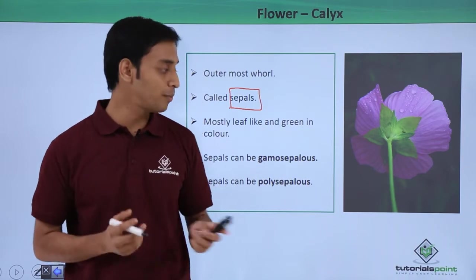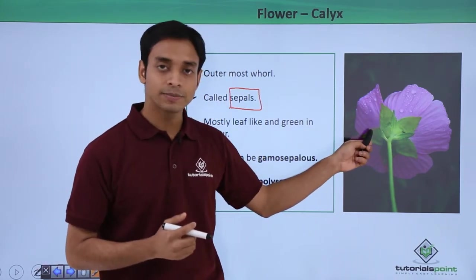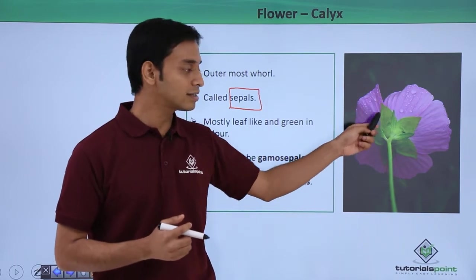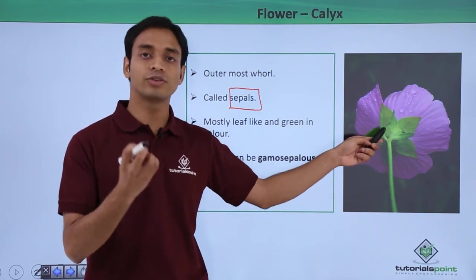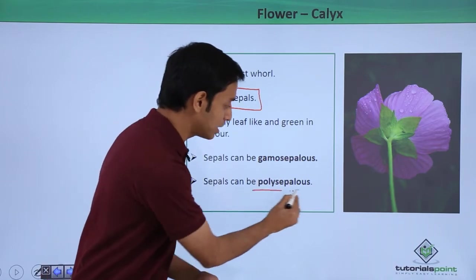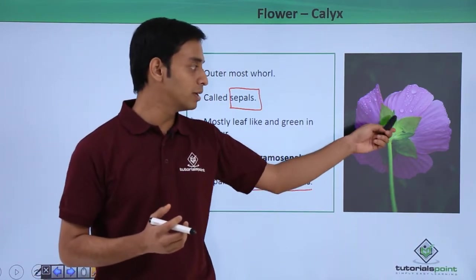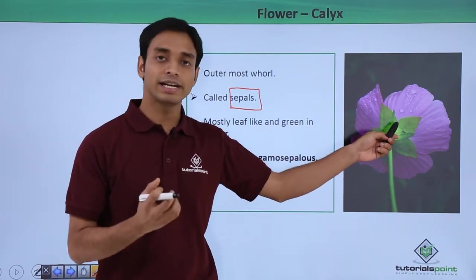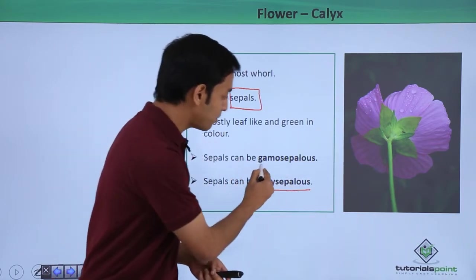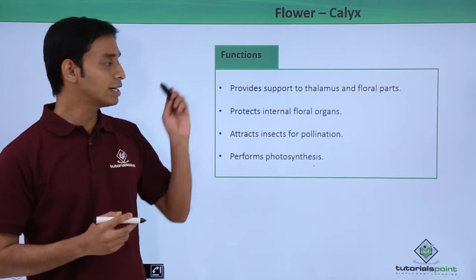Here we can see five different sepals that are separated. When these sepals are all separated and not fused or united, they are known as the polysepalous type. If these sepals are united and form a single sepal, they are known as the gamosepalous type of sepals.